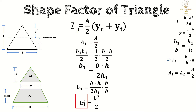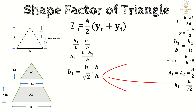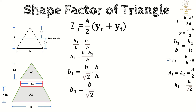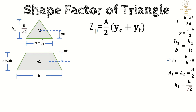Taking the square root of both sides gives h1 = h/√2. Since b1 = h1×b/h, substituting h1 gives b1 = (h/√2)×(b/h) = b/√2. Now calculating h minus h1: h − h/√2 = h(1 − 1/√2) = 0.293h.